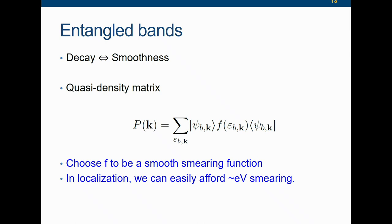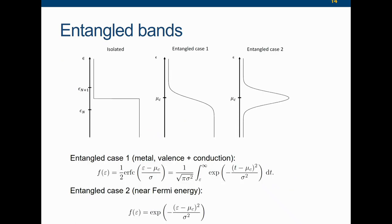You usually smear to the extent of the physical temperature, about 100K to 1000K. But we are doing localization, which means the energies we are looking at can span several Hartree. In constructing the quasi-density matrix, it's only a mathematical tool, and we can afford to use a smearing of several eV width. Converting to kBT, that's like tens of thousands of Kelvin. You can have pretty decent decay due to this artificial smearing. That's exactly the idea.